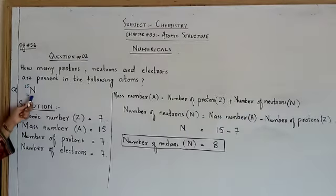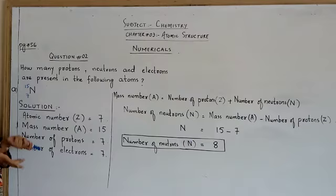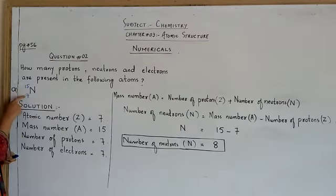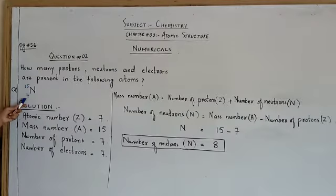First I will solve option A, which is nitrogen (N). It has 15 as superscript and 7 as subscript mentioned. Subscript means atomic number, superscript means mass number - so 15 is the mass number.